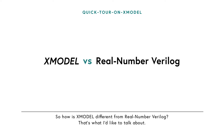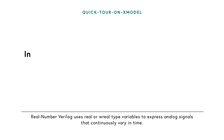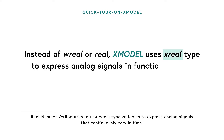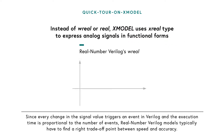So how is X-Model different from Real Number Verilog? Real Number Verilog uses real, or doubly real-type variables, to express analog signals that continuously vary in time. Since every change in the signal value triggers an event in Verilog, and the execution time is proportional to the number of events, Real Number Verilog models typically have to find a right trade-off between speed and accuracy.